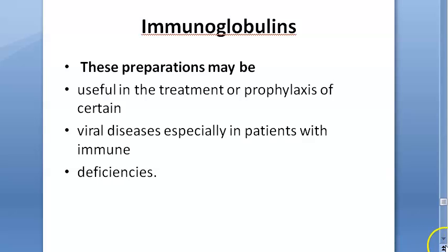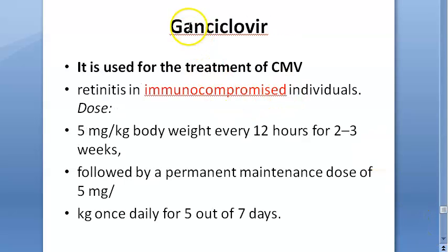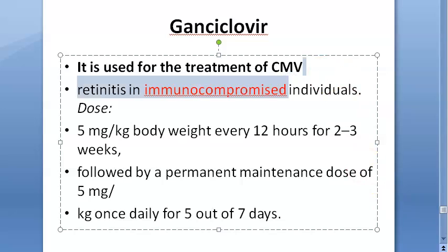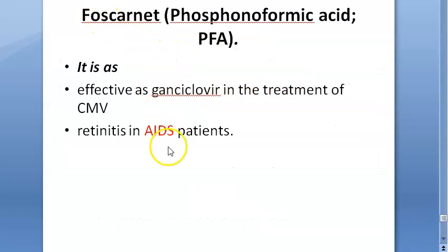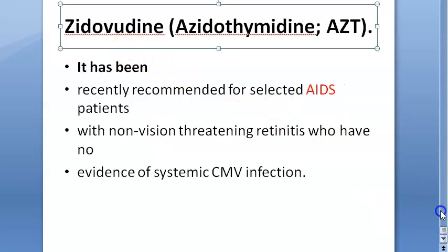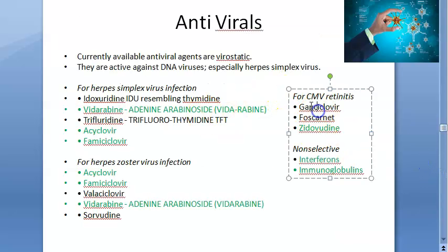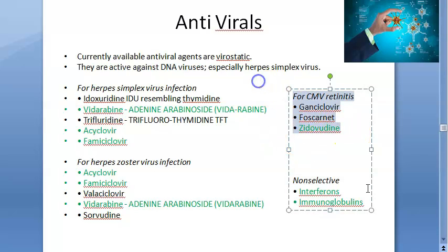Immunoglobulins are very useful. Ganciclovir is used for immunocompromised individuals to treat CMV — cytomegalovirus — retinitis. Foscarnet is also used for CMV retinitis. Zidovudine is again for AIDS patients. So ganciclovir, foscarnet, and zidovudine are the main drugs for CMV retinitis in AIDS patients.